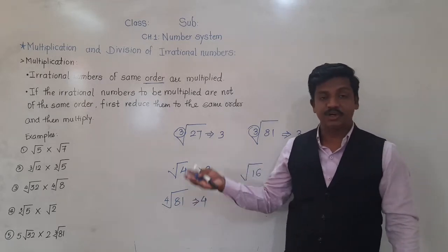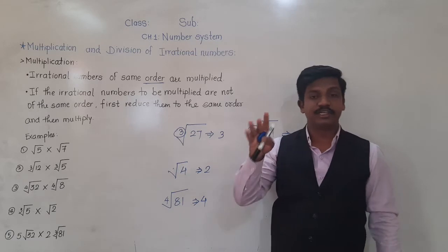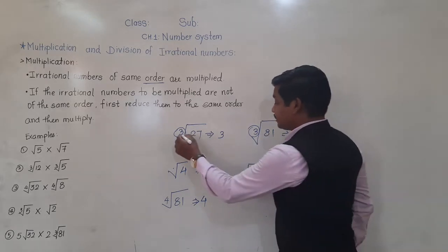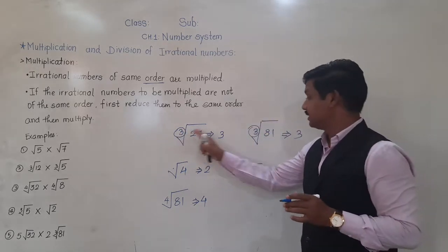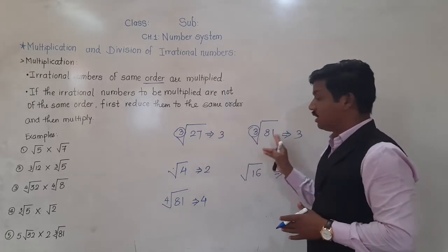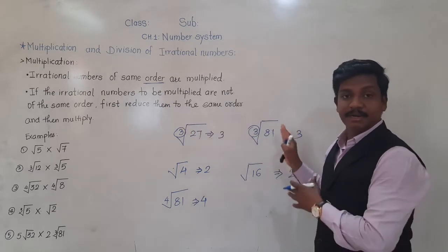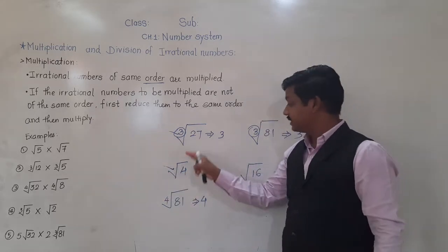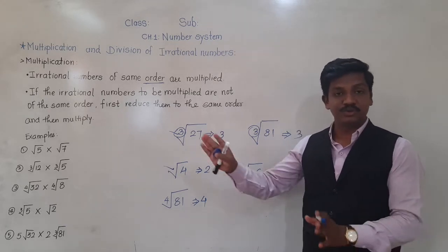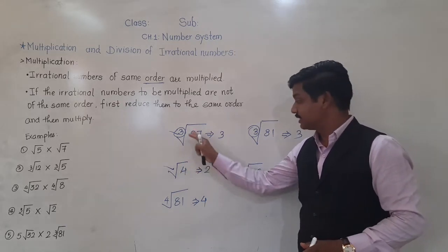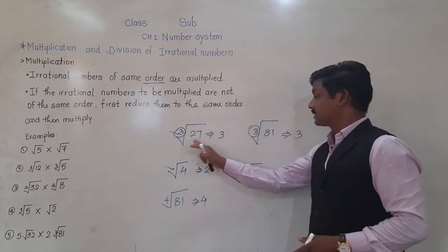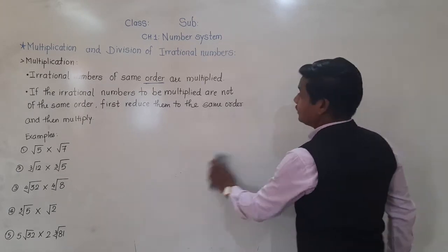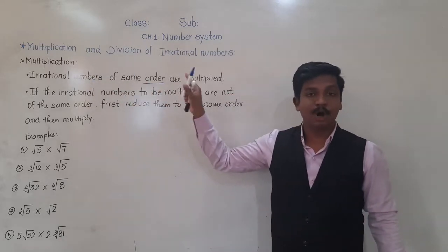So it can be second order, third order — means cube root — fourth root, fifth root, sixth root, seventh root, whatever. To multiply any two irrational numbers, their orders must be same. Here order is 3, and here also order must be 3. Then only the numbers inside the radical sign can be multiplied. If orders are 3 and 2, then these numbers cannot be multiplied directly. We have to do the modification. If their orders are same, then these numbers can be multiplied. This is the meaning of the first rule — irrational numbers of same order can be multiplied.